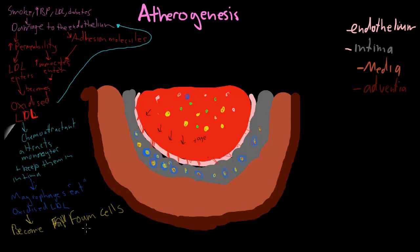They become foam cells, and it's at this point — around this time — that you start to see the fatty streaks, which are visible on autopsy, projecting just a little bit. It's not quite atherosclerosis yet. So we see the foam cells, and this is when you see fatty streaks. These foam cells are quite important in the progression of atherosclerosis.